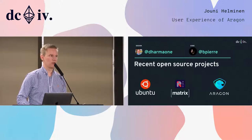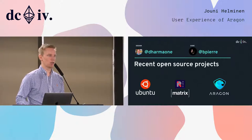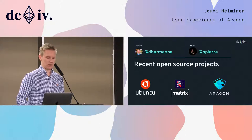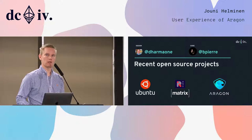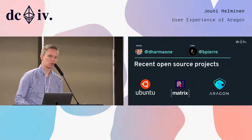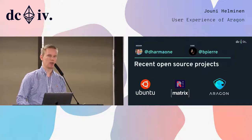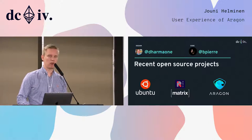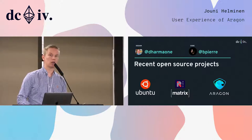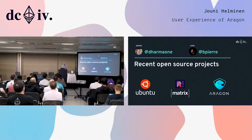So really briefly, I just wanted to introduce myself and my collaborator and friend Pierre. My name is Joni, and we've been working on a couple of different open-source projects over the last few years. I worked on Ubuntu Phone Mobile for about four years, and then did a recent redesign for Riot and Matrix, and most recently, last year or so, we've been working very hard on Aragon, trying to make organizations on blockchain very easy to use.